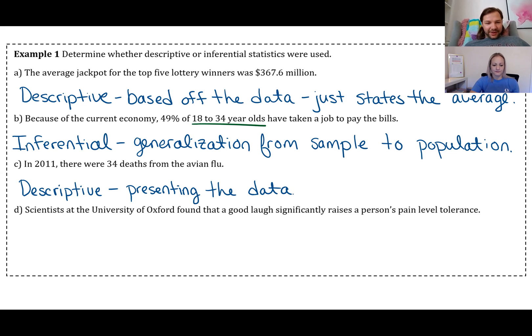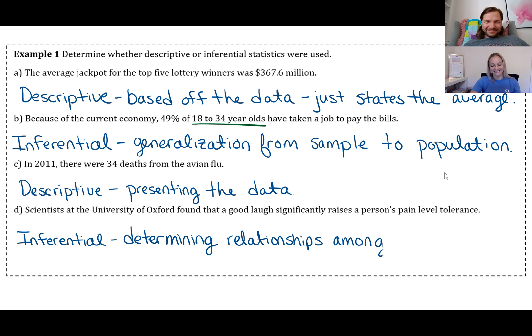Part C says in 2011, there were 34 deaths from the avian flu. So descriptive or inferential? That's descriptive because we can actually look back at 2011 and say exactly how many deaths occurred, or we can at least look at what happened and say that's what we think it was, 34 deaths from bird flu.